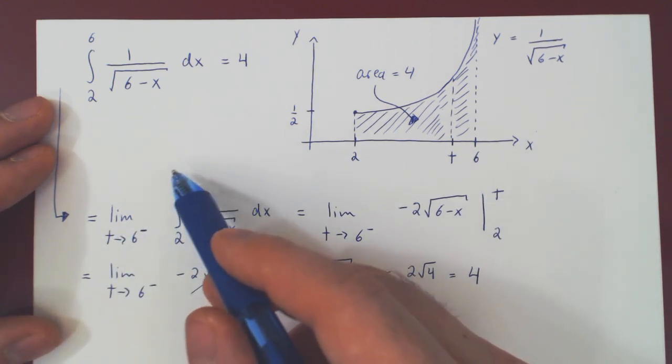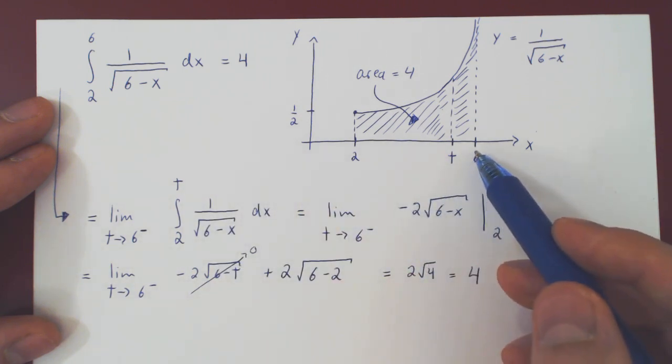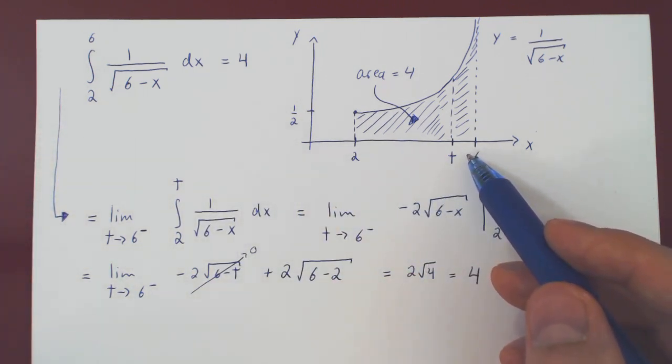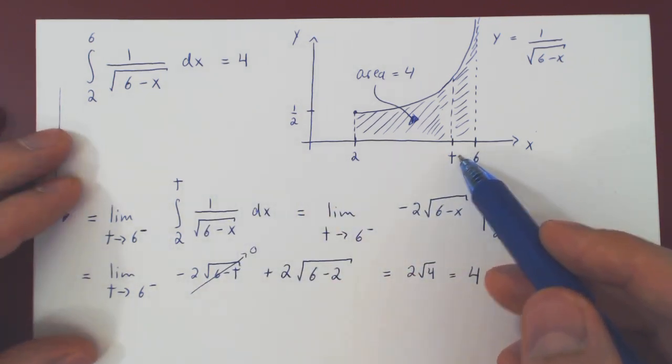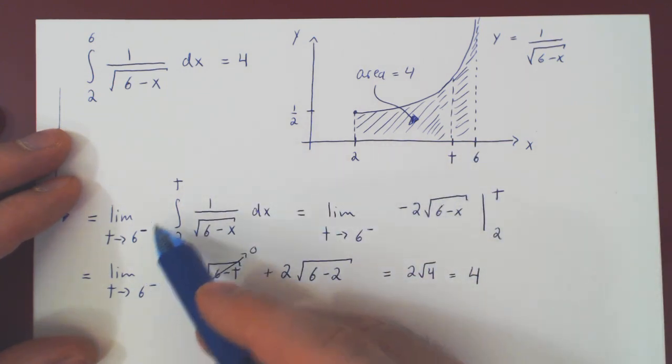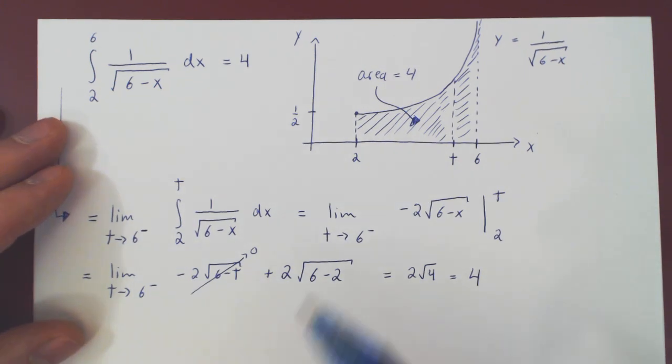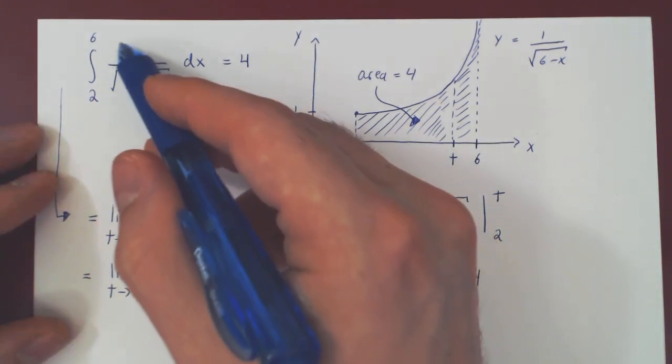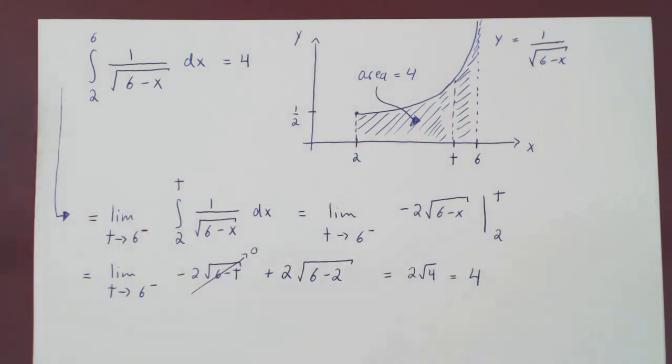The only difference is here we let t approach the problem, which in type 1 is an infinite bound of integration, in type 2 is our discontinuity. And that's really the only difference. What's key is that you are looking for possible discontinuities.